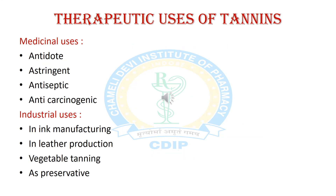In the last slide we will discuss various therapeutic uses of tannins. Medicinal uses include use as an antidote, astringent, antiseptic, and anti-carcinogenic. Industrial uses include manufacturing of ink, leather production, use in vegetable tanning, and as a preservative.